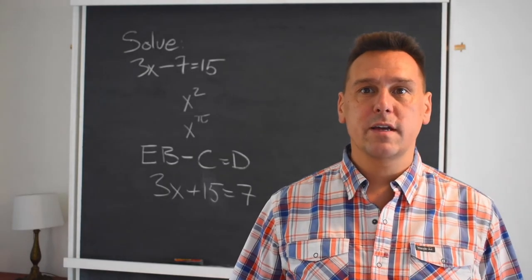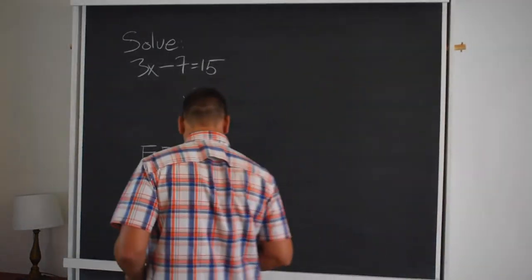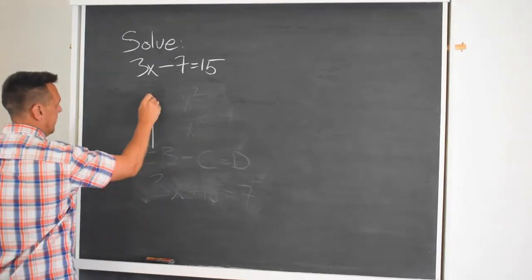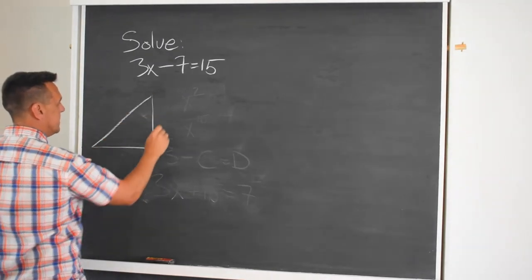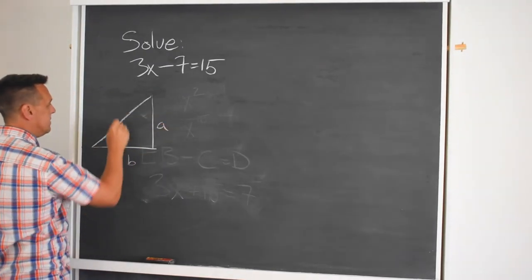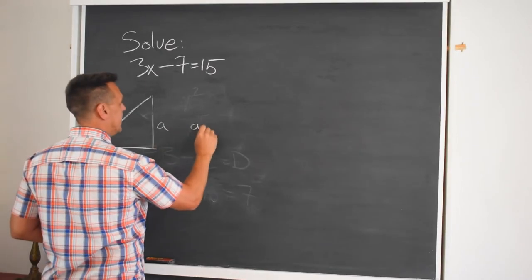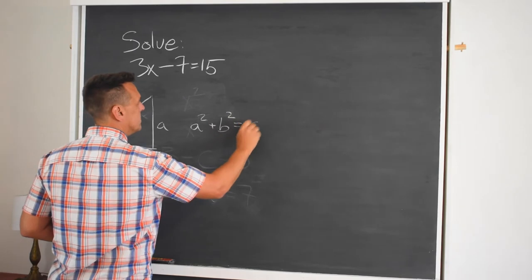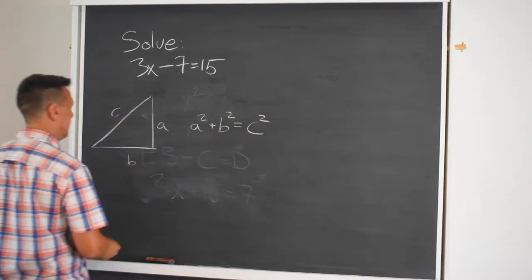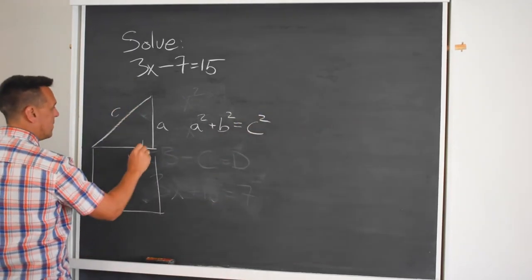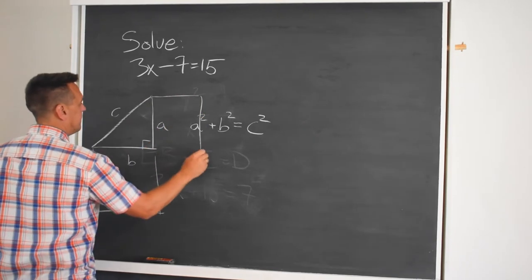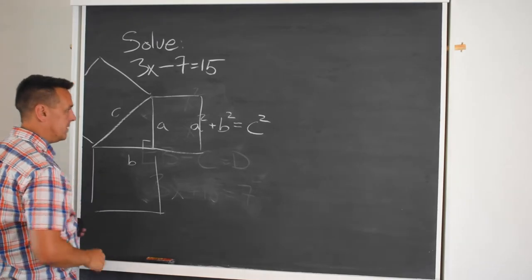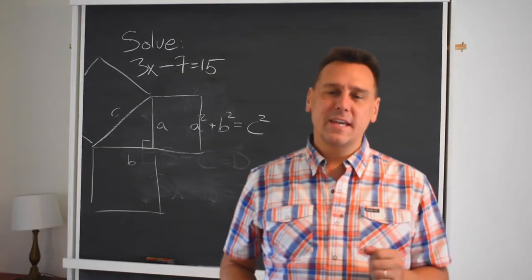We start with the right triangle, and we're going to use our ability to label things. This is A, this is B, this is C, and in that case the square on one plus the square on the other equals the square on the side opposite the right angle. I'm not sure we've got a square there. No big deal.